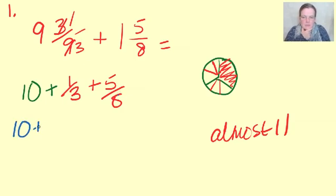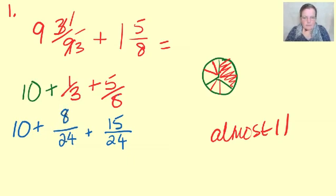So, that's ten whole pizzas plus now we're going to have this lot out of twenty-four and that lot out of twenty-four. So, you multiply the bottom by three, multiply the top by three, multiply the bottom by eight, multiply the top by eight.